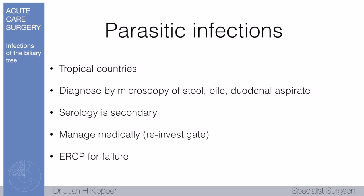Parasitic infections are seen in tropical countries. Diagnosis is by microscopy of the stool, bile, or adrenal aspirate where you see the parasites. Serology is of secondary value — you might get positive serology because the patient has parasites but the jaundice may not be from parasitic biliary infection, so you get false negatives and false positives. It is managed medically with antiparasitic medication, followed by reinvestigation, and only if medical management fails would you consider an ERCP.